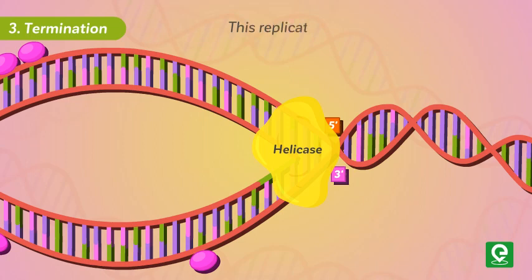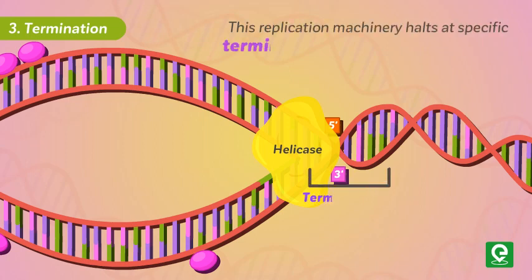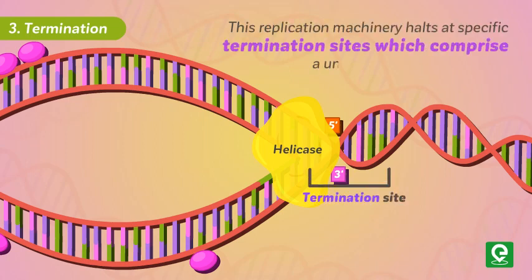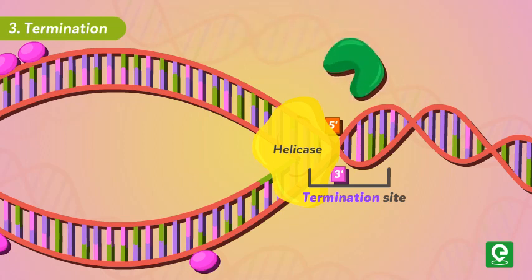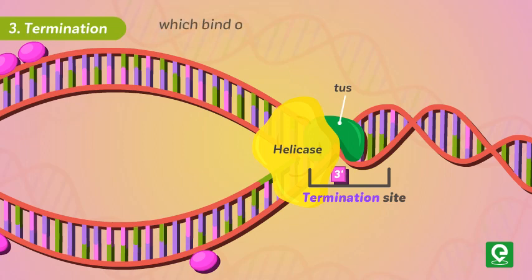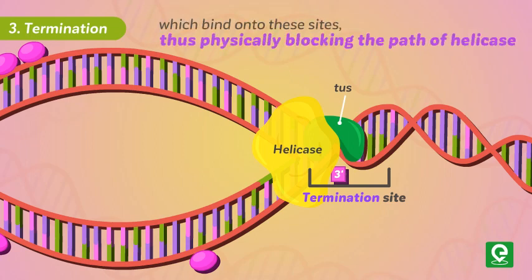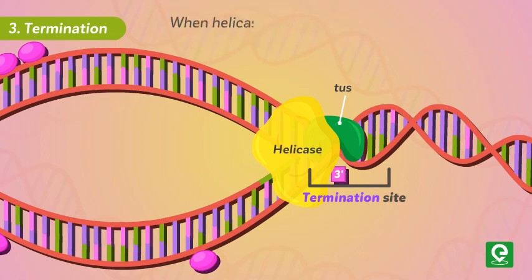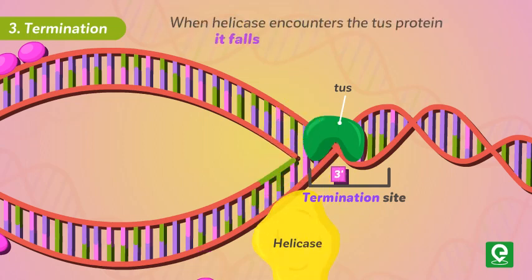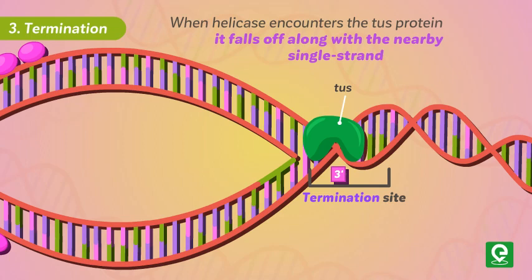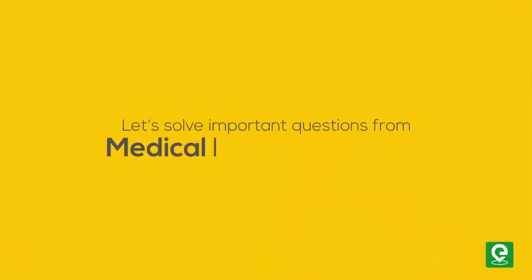Step three — Termination: The replication machinery halts at specific termination sites comprising a unique nucleotide sequence. This sequence is identified by specialized proteins called Tus, which bind to these sites, physically blocking the path of helicase. When helicase encounters the Tus proteins, it falls off along with the nearby single-strand binding proteins.